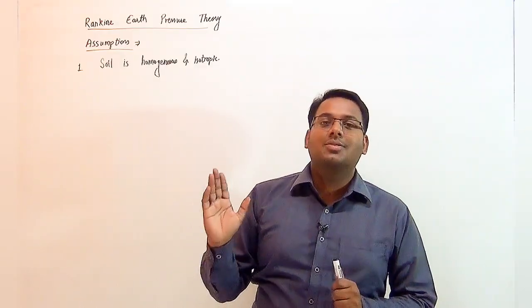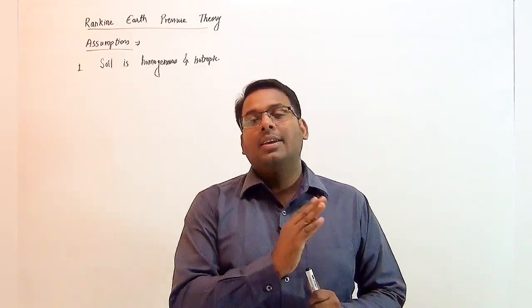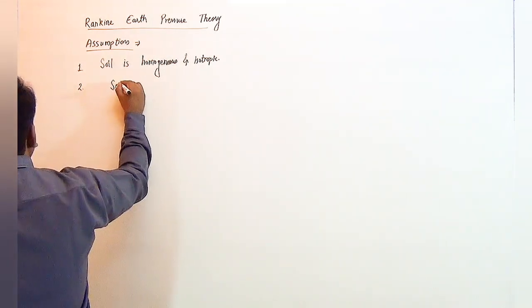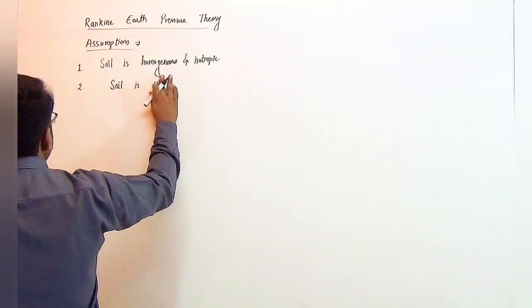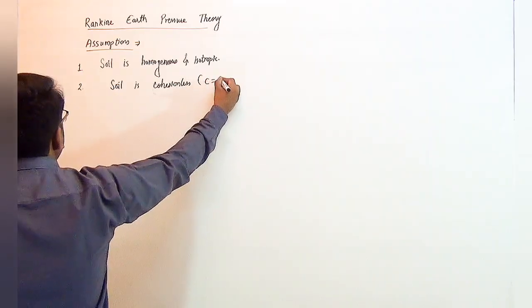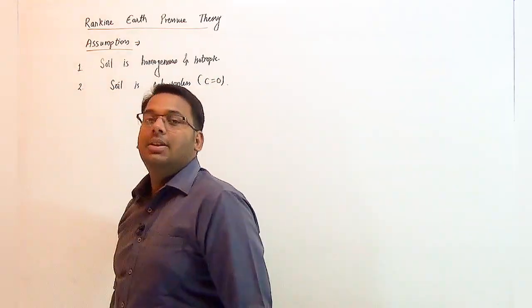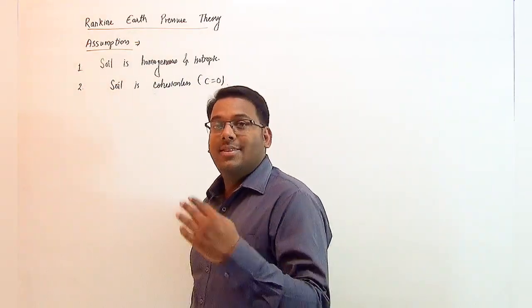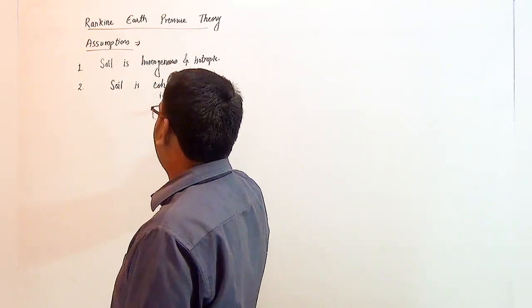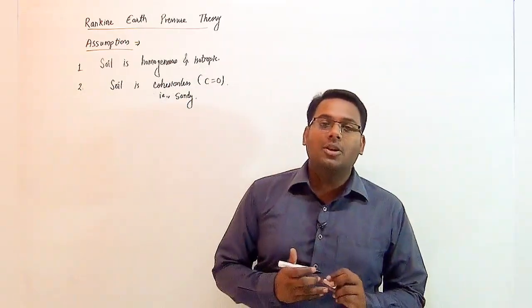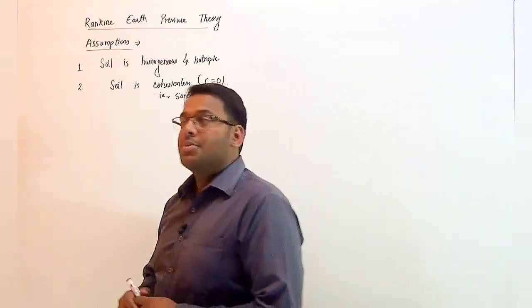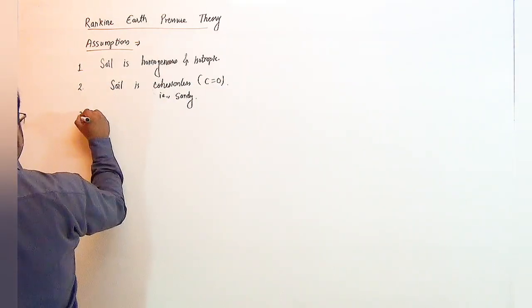In all directions the property of the soil will be equal. The second assumption is that the soil is cohesionless. Cohesionless means c will be zero. The example of cohesionless soil is sandy soil, which means Rankine's theory of earth pressure is applicable only for sandy soil.